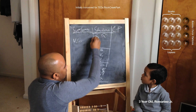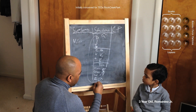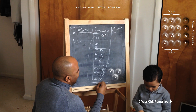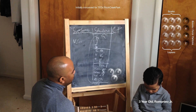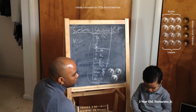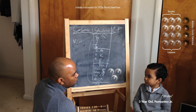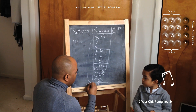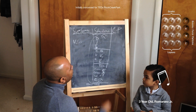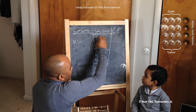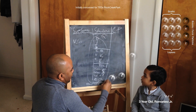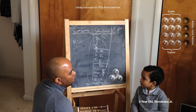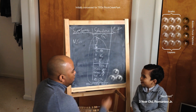Now, once we combine these quarks — if we do up, up, down, we get a proton. And if we make a down, down, up, we make a neutron.